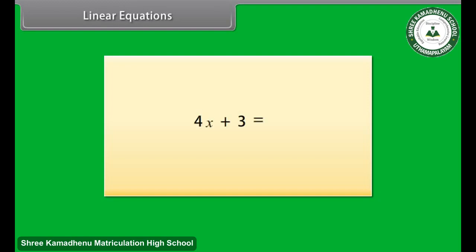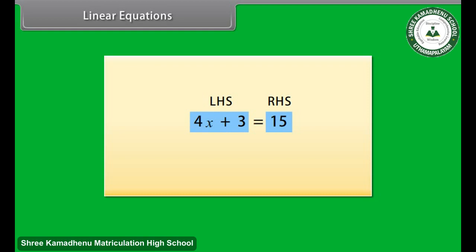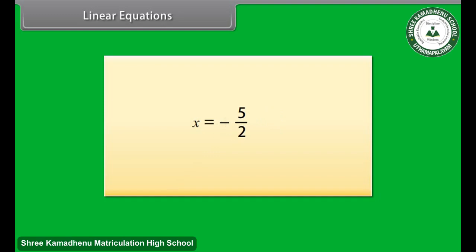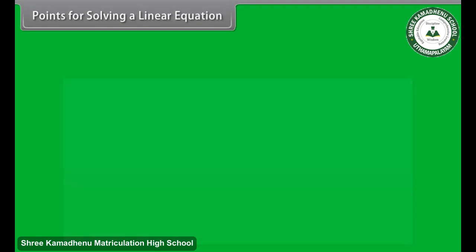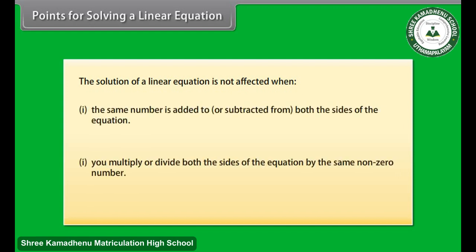A simple linear equation is an equality between two algebraic expressions involving an unknown value called the variable. The two sides of an equation are called right-hand side or RHS and left-hand side or LHS. Consider this equation. The solution or the root of this equation is minus 5 by 2. Let's see where it represents on the number line. While solving an equation, you must always keep these points in mind: the solution is not affected when the same number is added to or subtracted from both sides, or when you multiply or divide both sides by the same non-zero number.